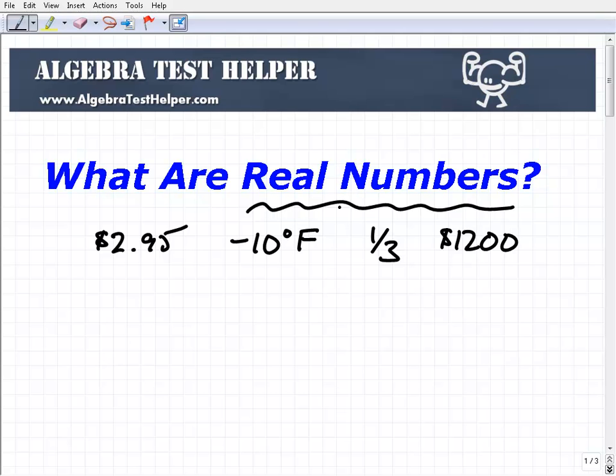So real numbers are a collection of various different types of numbers. That's the first thing. Real numbers are made up of various independent kind of subset types of numbers. And you're going to study those. I'm sure if you're in algebra or if you're in pre-algebra, you'll study those different types of real numbers.